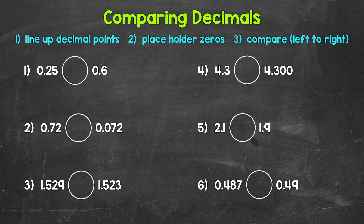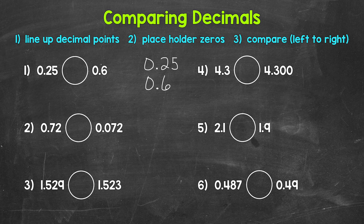We have to compare the place values. So first, what we need to do is line up the decimal points. So we have 25 hundredths and 6 tenths. Lining up the decimal points lines up all of the places. We have zeros in the ones place, a 2 and a 6 in the tenths place, and then a 5 in the hundredths place. This may look a little off since it's offset, because our decimals go to different places. So what we can do is use placeholder zeros. Remember, zeros to the right of decimal digits do not change the value of the decimal — they give us an equivalent decimal.